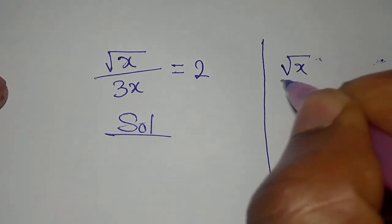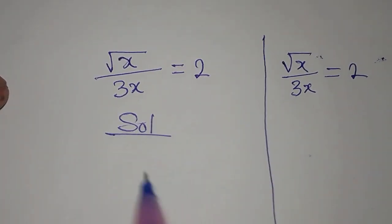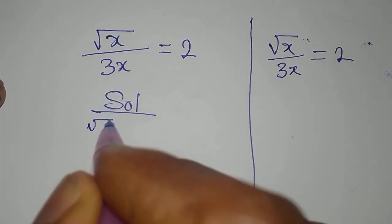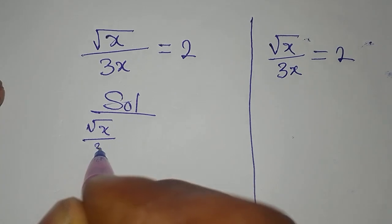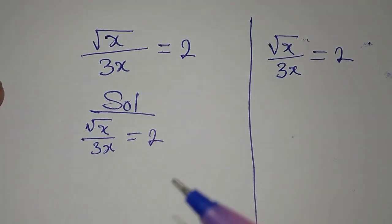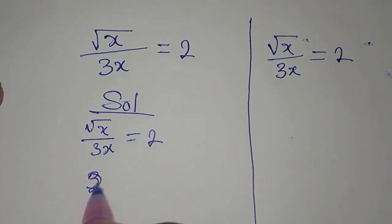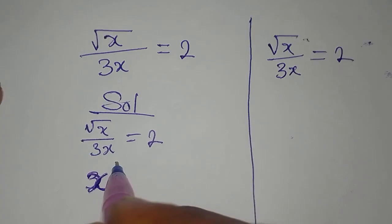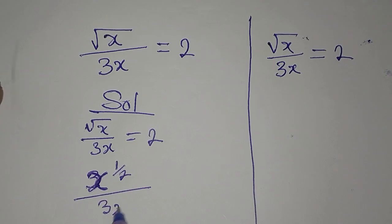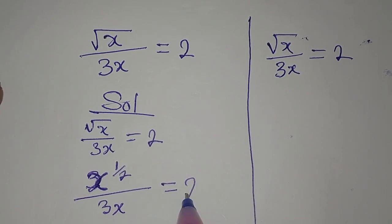Square root of x over 3x equals 2. Let's go with this method first. For this method, realize that square root of x is the same as x to the power of 1/2. Then this is divided by 3x, and this is equal to 2.